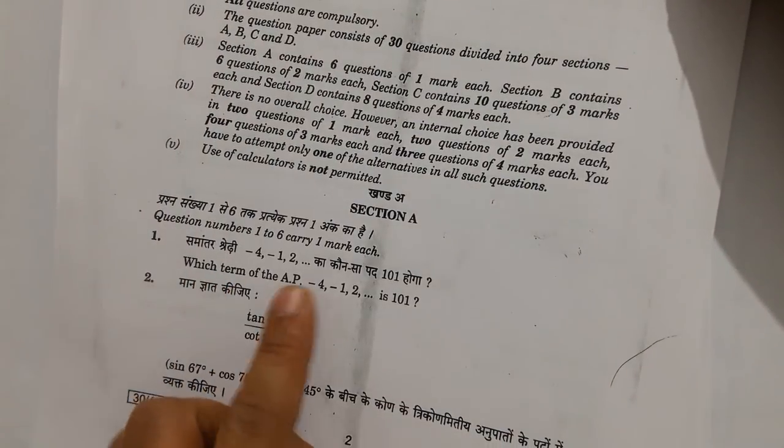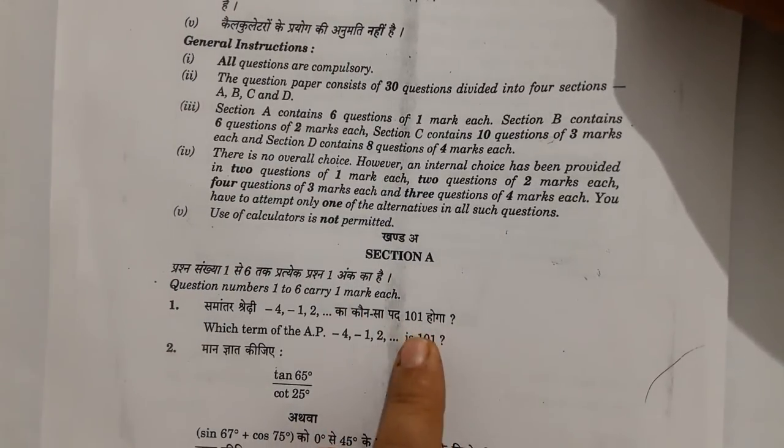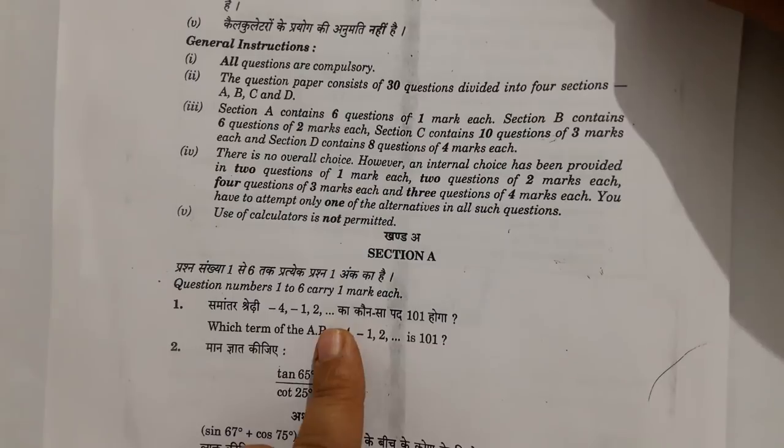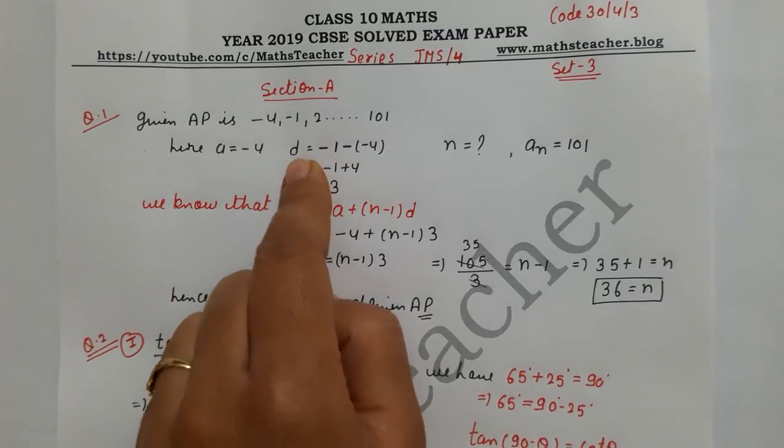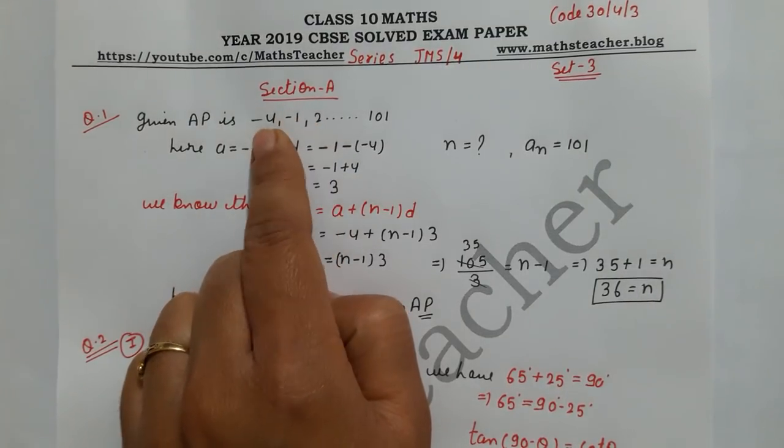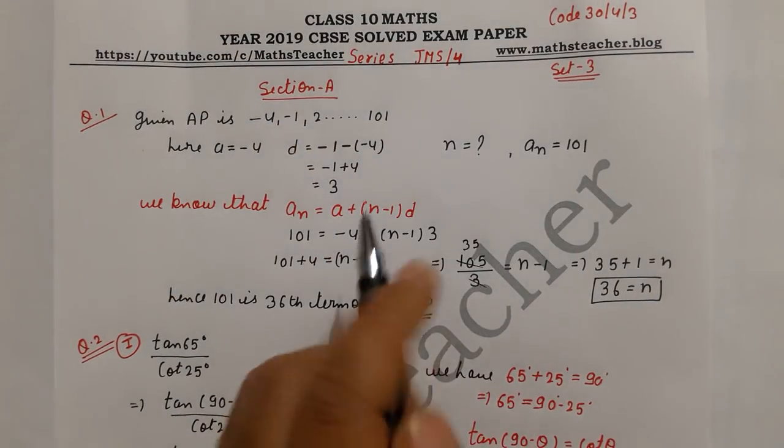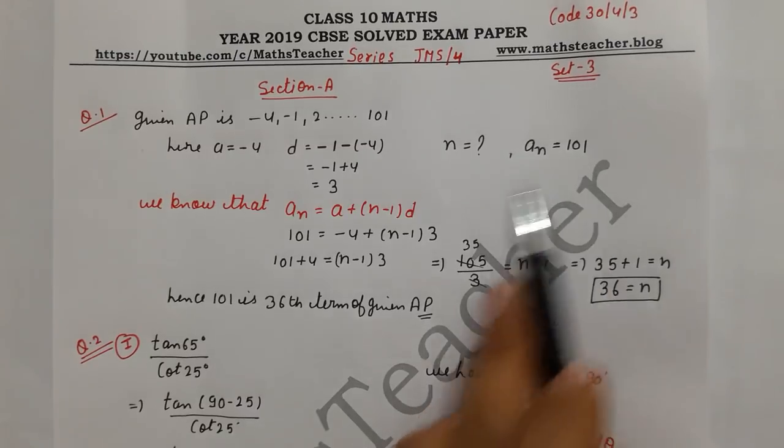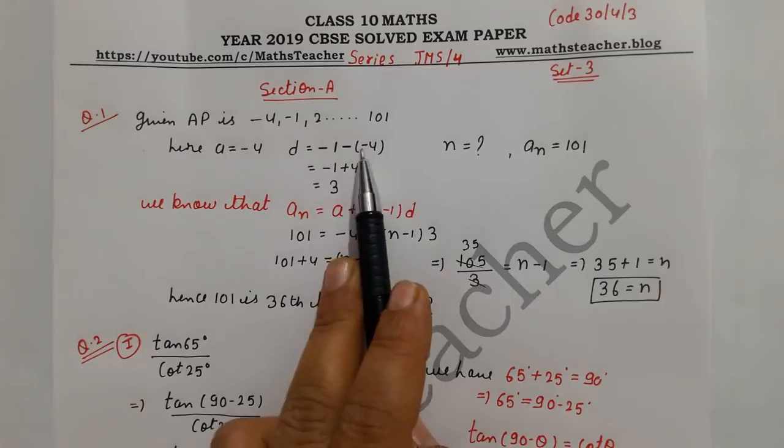Your first question: which term of the AP is 101? This is your NCERT question. We need to find which term is n. For the AP, our first term we know, and we can find common difference d = a2 - a1. We subtract the second term from the first. The last term is an, so d = -1 - (-4) = 3.